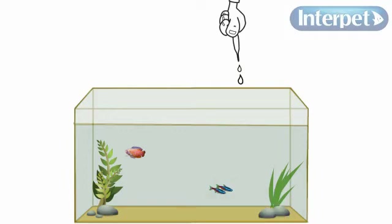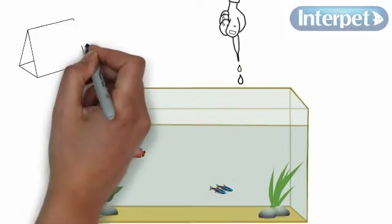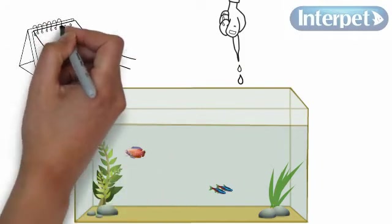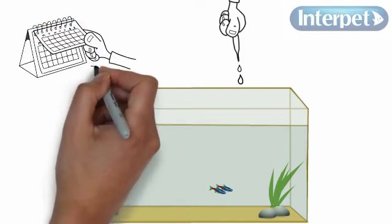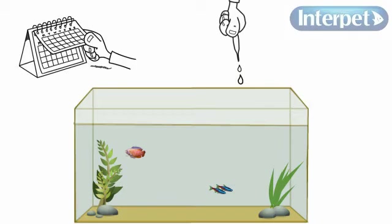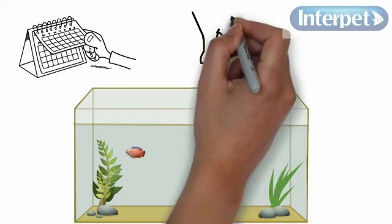Start with only a few fish and choose strong fish varieties. Don't add more fish straight away. Add new fish in small quantities gradually over a number of weeks, giving the bacteria a chance to increase with the fish population.